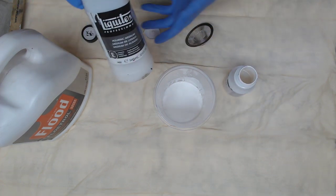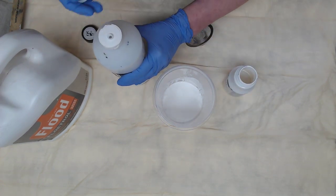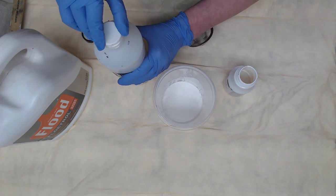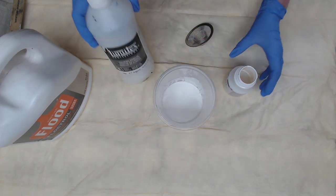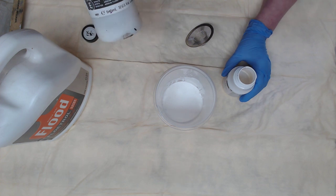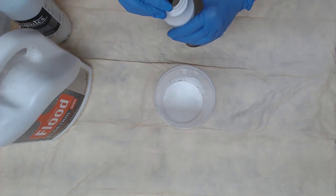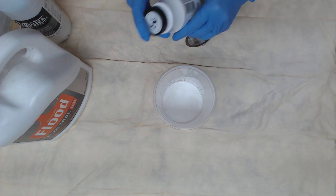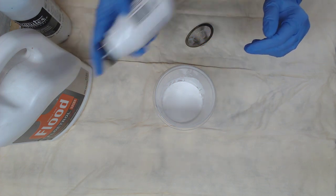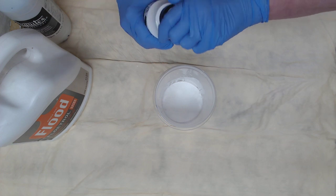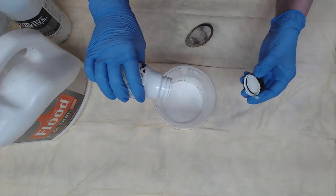And I use Liquitex pouring medium. It's a little expensive, but it works really well to get the cloud effect, and you can tell from my videos how well that works. So I put that in there, and I do give it a shake because I want to get all that paint out of that bottle. And I'm going to go ahead and pour that in there.